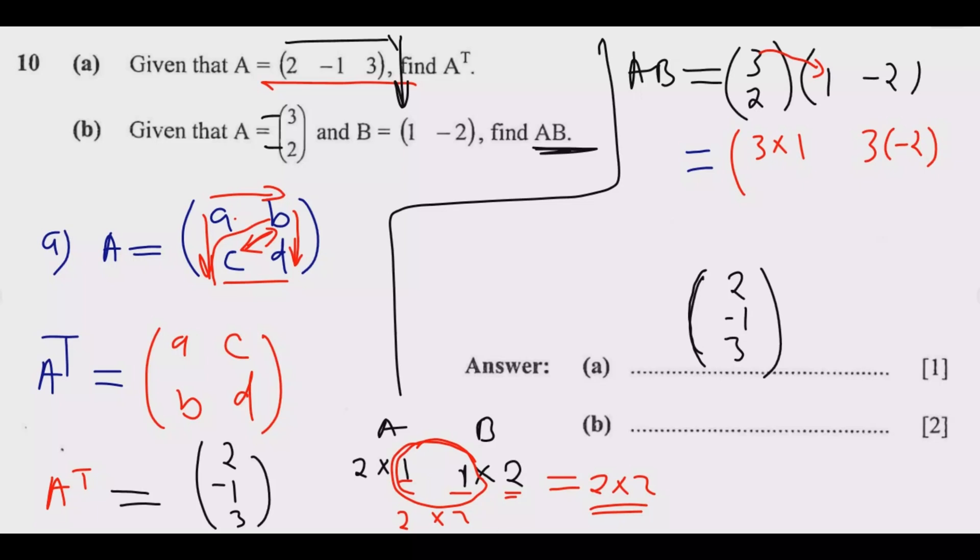We are multiplying this one and that one. Then you go to the bottom row: it will be 2 multiplied by 1, then 2 multiplied by -2 like that.